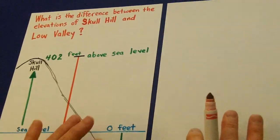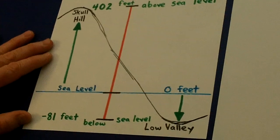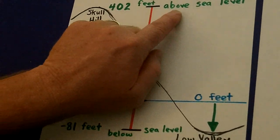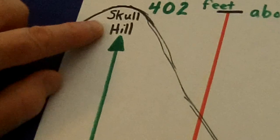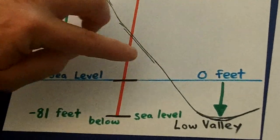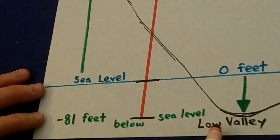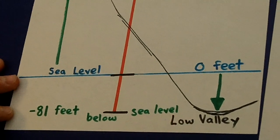Number two. Often times on tests you'll see something like this. It's a sea level and elevation problem where you start off on some kind of hill or mountain, so many feet above sea level. So let's say here's Skull Hill in Death Valley. It's 402 feet above sea level. Then somewhere in Death Valley, it's 0 feet level. At the lowest point of Low Valley, it's negative 81 feet below sea level.